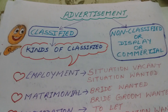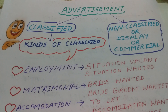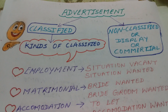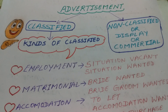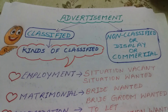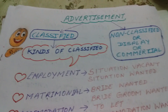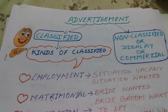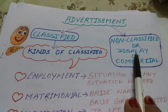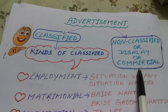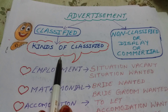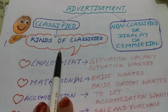Through a chart, I have tried to show you the advertisement classification. Advertisements are of two types: classified and non-classified. Non-classified are also called display or commercial. Classified are further divided into categories.